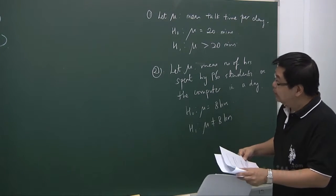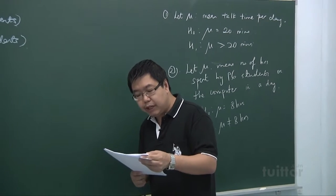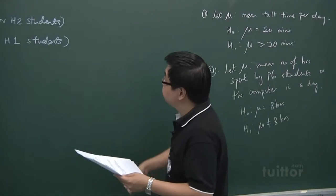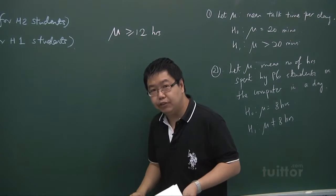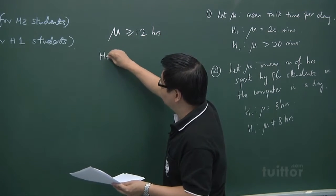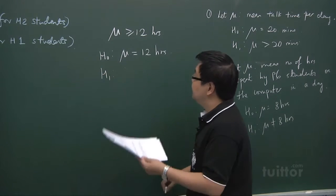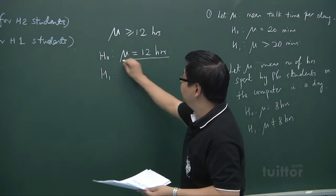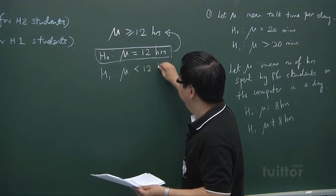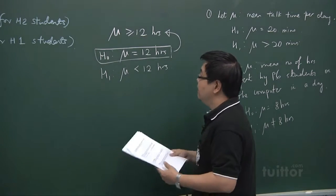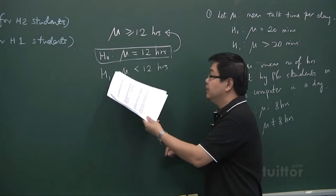The third example says that a doctor claimed that the average number of hours of sleep among the elderly is at least 12 hours. Test whether the doctor's claim is true. The doctor claims the mean is at least 12 hours — either greater than or equal to 12 hours. But the null hypothesis is always an equality, so H0: mu equals 12. Your H1 has to dispute this claim, so H1: mu less than 12 hours. If H0 is not rejected, the doctor's claim is true. If H0 is rejected in favor of H1, the doctor's claim is not true.